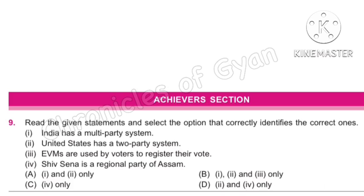Statement 3: EVMs (electronic voting machines) are used by voters to register their vote. This is correct — EVMs were used for the first time in Kerala at 50 booths in Ernakulam in 1982. Statement 4: Shiv Sena is a regional party of Assam. This is incorrect — it is a regional party of Maharashtra, founded by Bal Thackeray on 19 June 1966. The correct answer is Option B: statements 1, 2, and 3 are correct only.